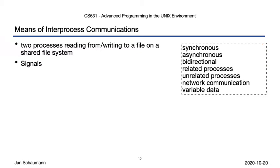Signals in comparison are rather different. They are asynchronous and unidirectional, allow communications between both related and unrelated processes, but do not allow communications across the network. On top of that, you're quite limited in the amount and type of information you can relay — all you can do is say condition X occurred, and that's it.